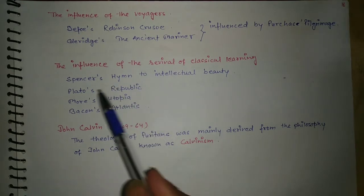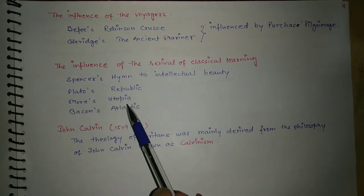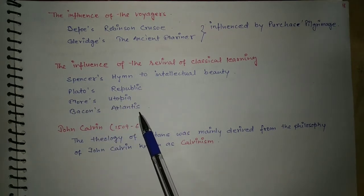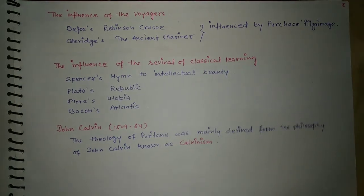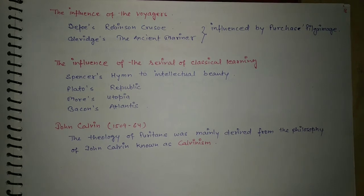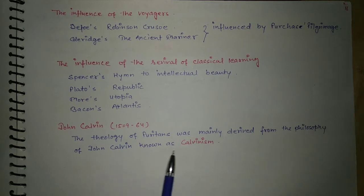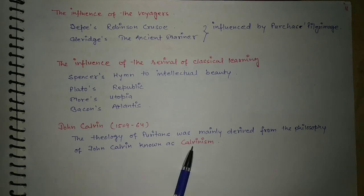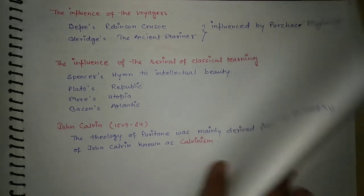The influence of the revival of classical learning can be seen in Spenser's Hymn to Intellectual Beauty, Plato's Republic, More's Utopia, and Bacon's Atlantis. Later, we can talk about John Calvin — the theology of the Puritans was mainly derived from the philosophy of John Calvin, known as Calvinism. So the Puritans were influenced by Calvinism, which was propounded by John Calvin.